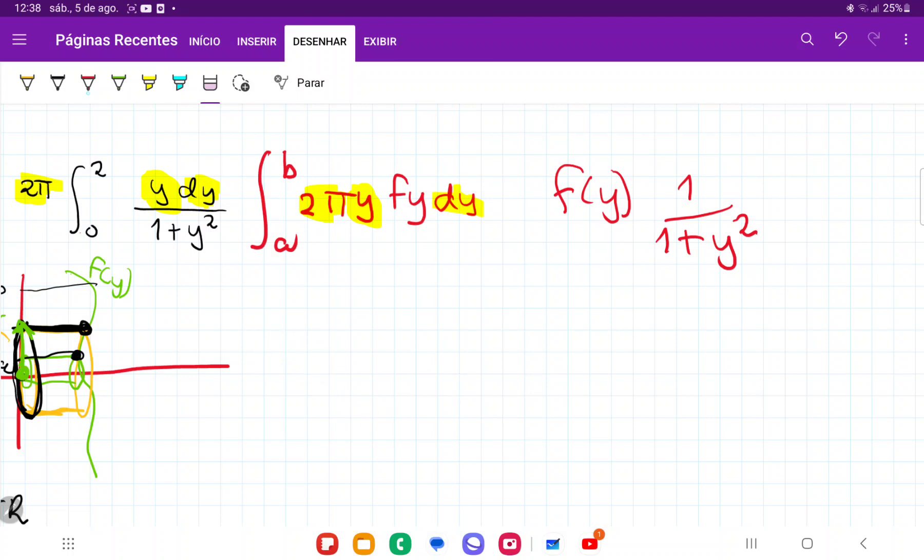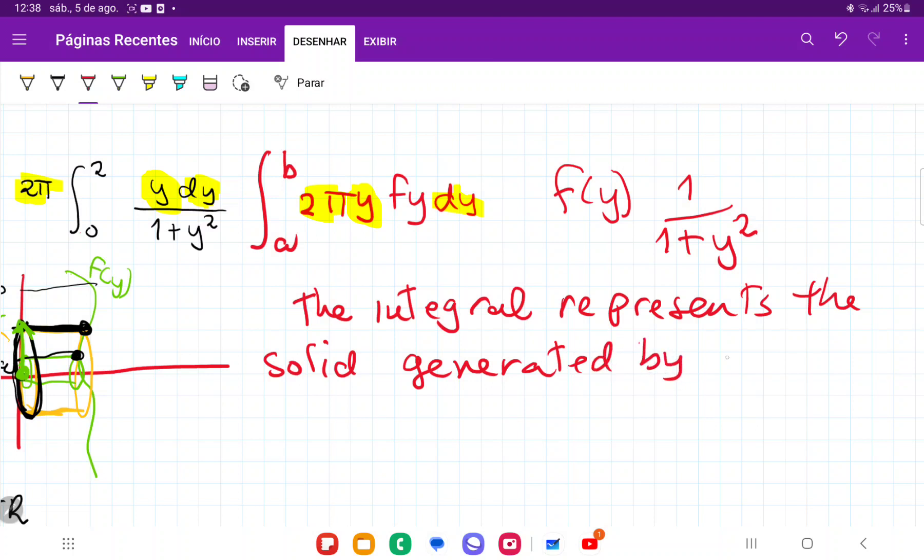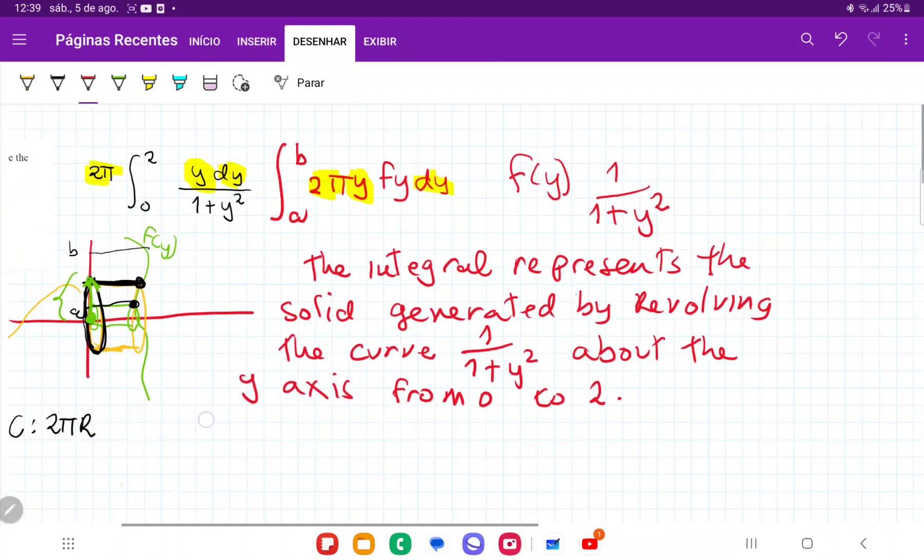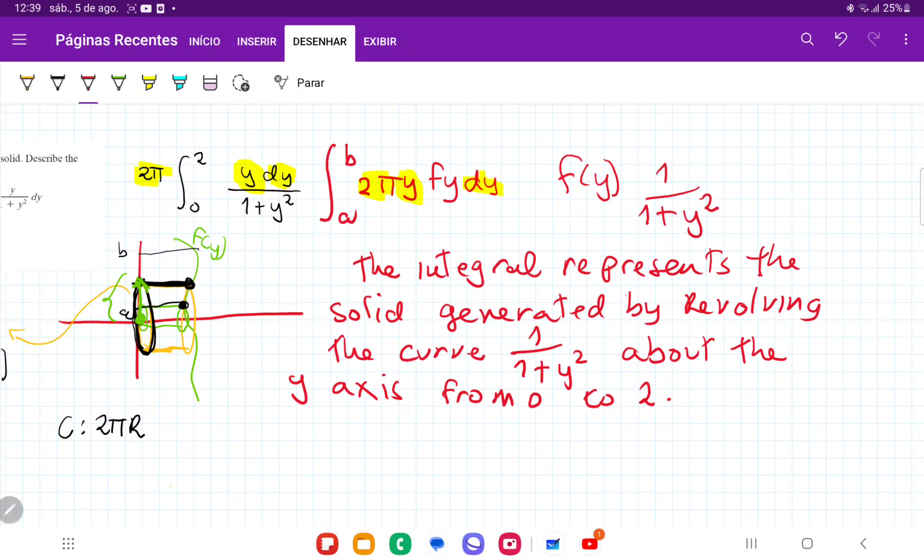And so we can see here that this integral, and so we conclude that the integral represents the solid generated by revolving the curve 1 over 1 plus y squared about the y-axis from 0 to 2. And that's what we get when we compare these two situations, and we see that it's just a curve revolved.